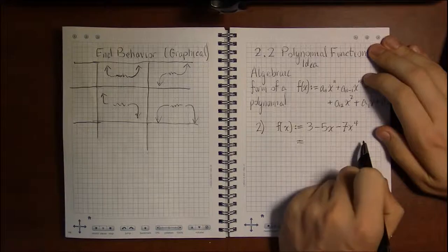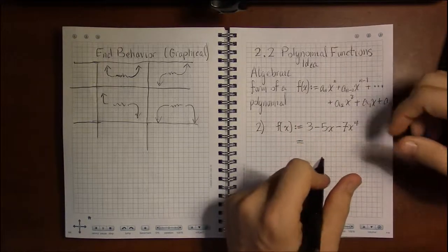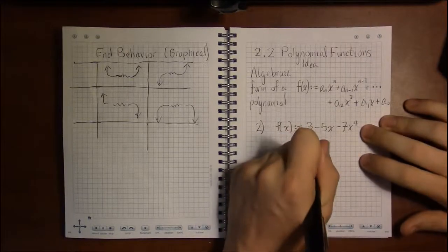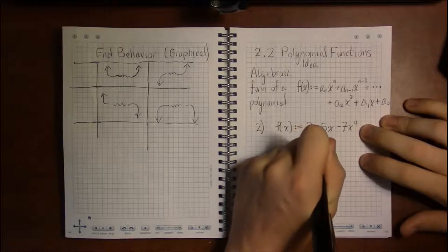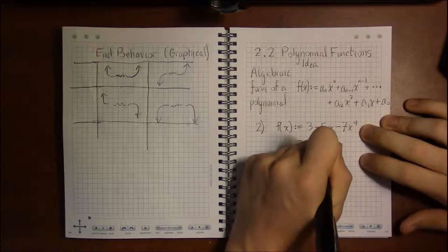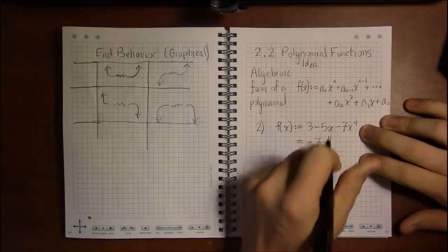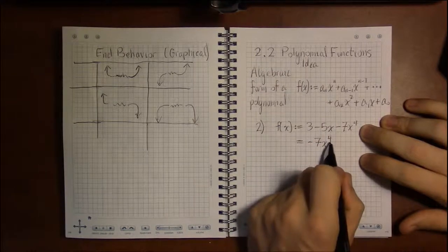The next highest power is -5x, and that's x to the first. We just don't write 'first' because x to the first is just x.